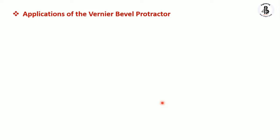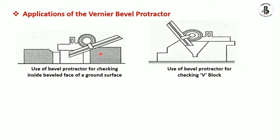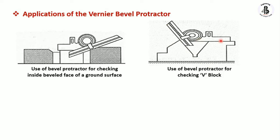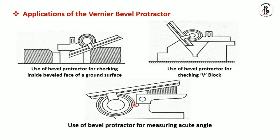Now the various applications of the vernier bevel protractor. First, it is used for checking the inside bevel face of ground surfaces, so you can easily measure those ground surfaces. The second use is for checking the V-block — the V-block rests on the table and using the blade and adjustment you can easily measure the angle. The third application is measuring the accurate angle using the blade and base adjustment.